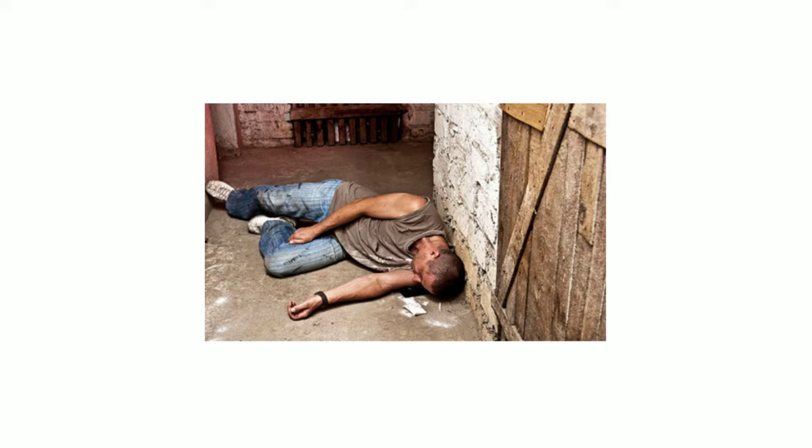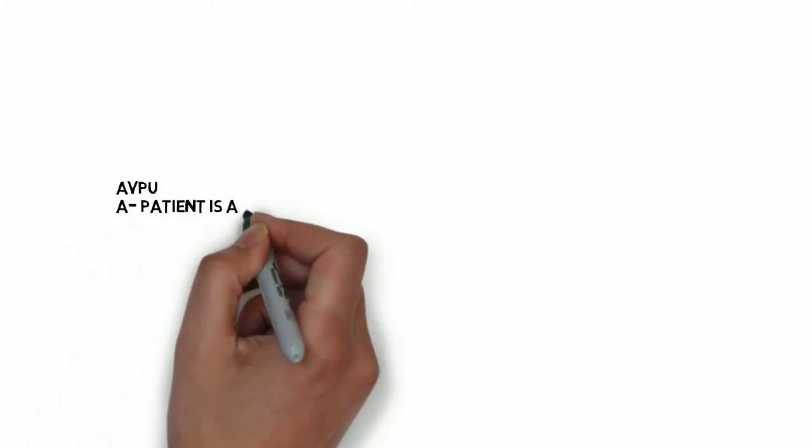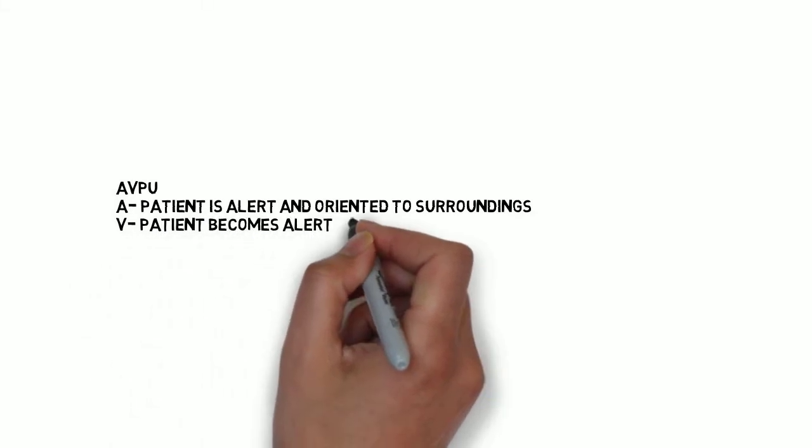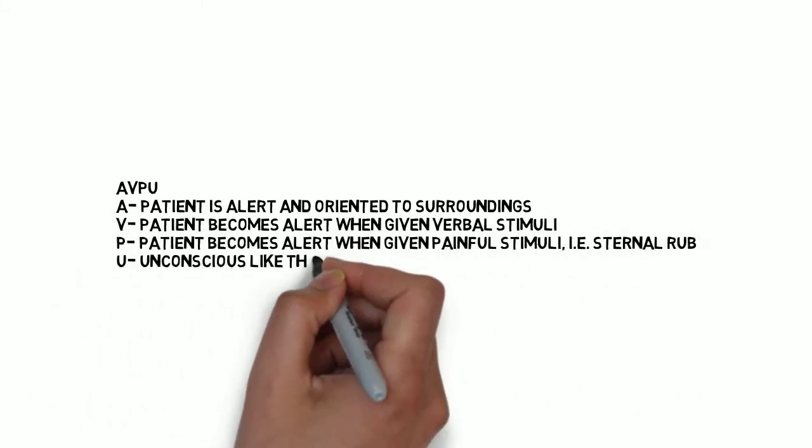The primary survey is also similar to the trauma assessment. We will verbalize our general impression of the patient at this point. We will also determine the responsiveness or level of consciousness. For medical patients, we use the mnemonic AVPU: A is alert, V is verbal stimuli, P is painful stimuli, and U means the patient is unresponsive. We will also determine the chief complaint and try to identify any life-threatening situations at this point.